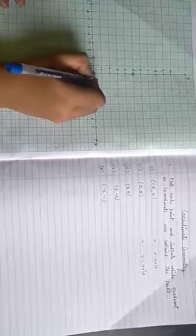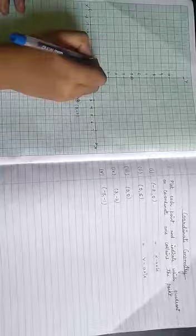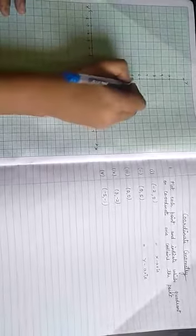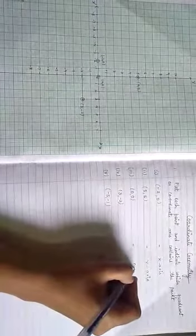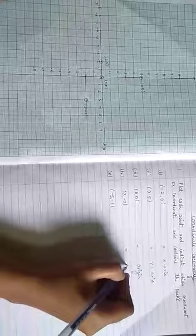This is (0, 0). This is (-2, 0). And this point is (0, 5). Now, the last point is (-5, -1). This lies in the fourth quadrant.